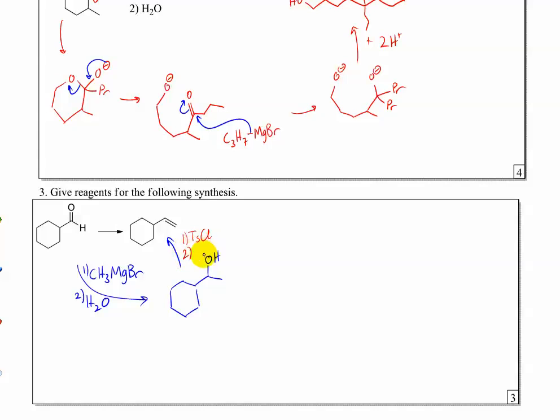You could make a tosylate, or turn it into some kind of leaving group, like chloride or bromide, and then eliminate. And what kind of base would you use to eliminate? A large base. Yeah, a large base. What did you use, anybody? Uh, CH3, uh, yeah, tert-butoxide. Okay.